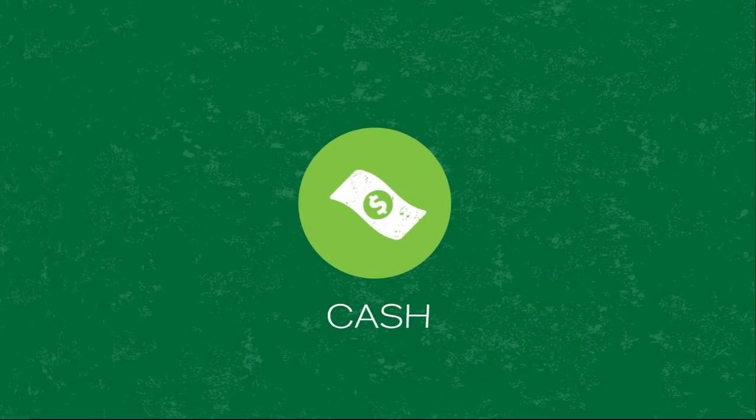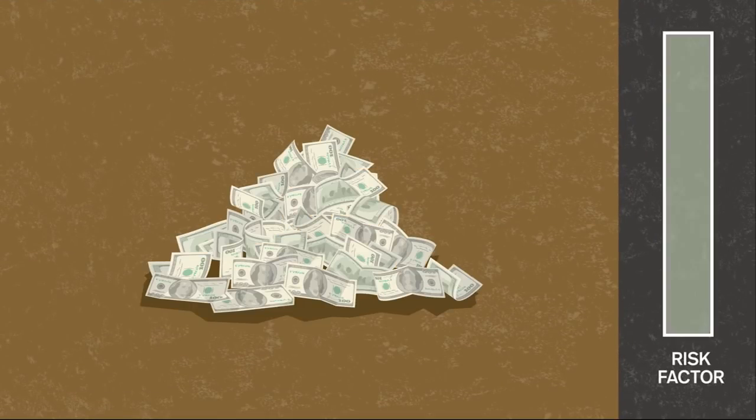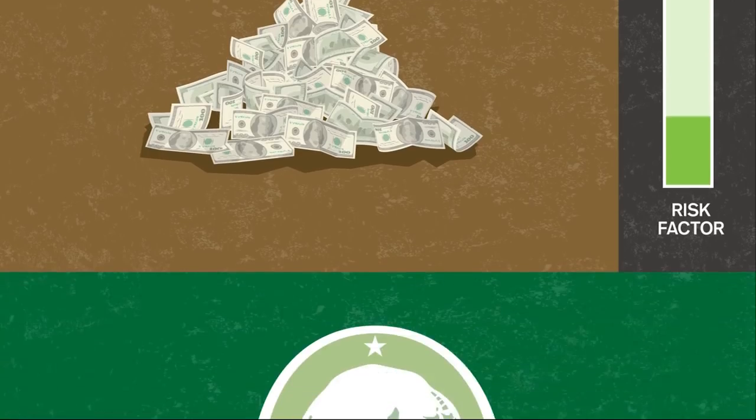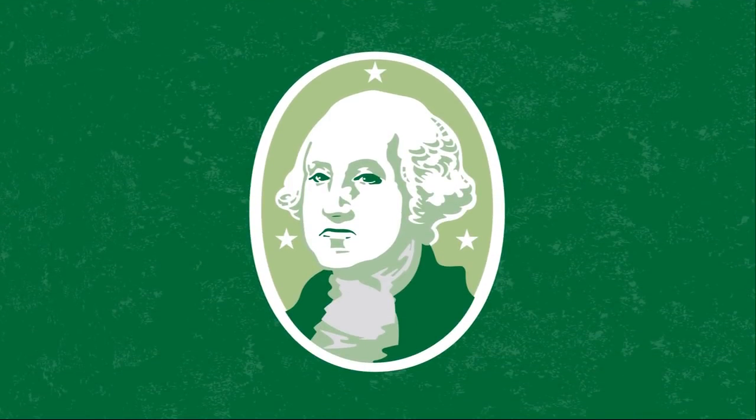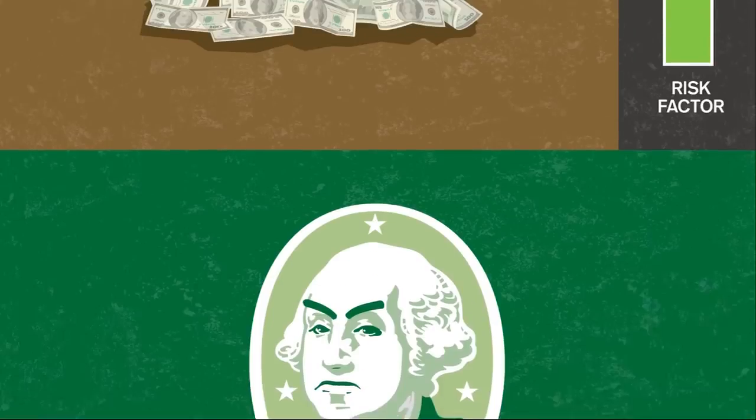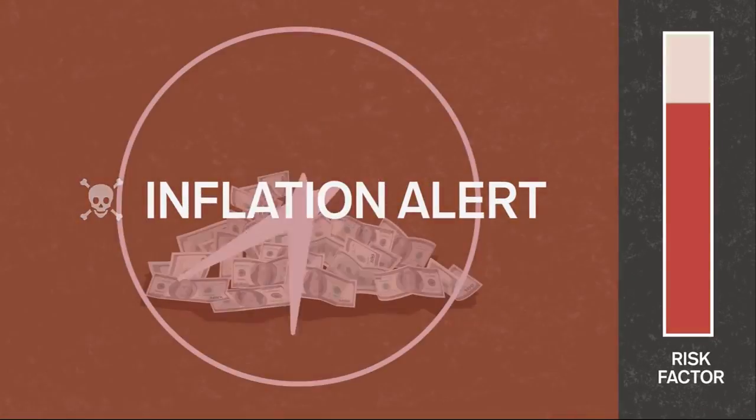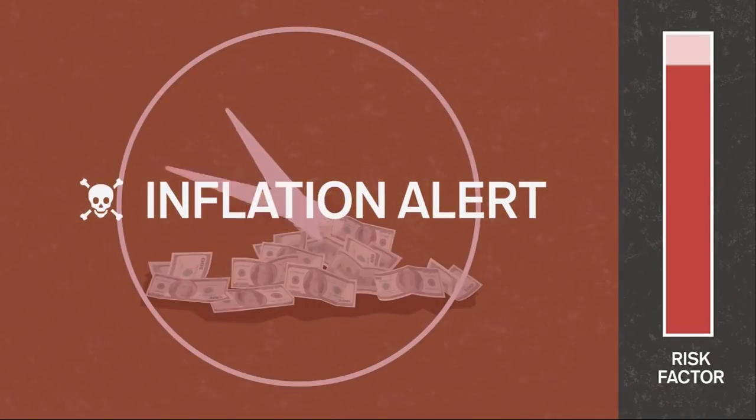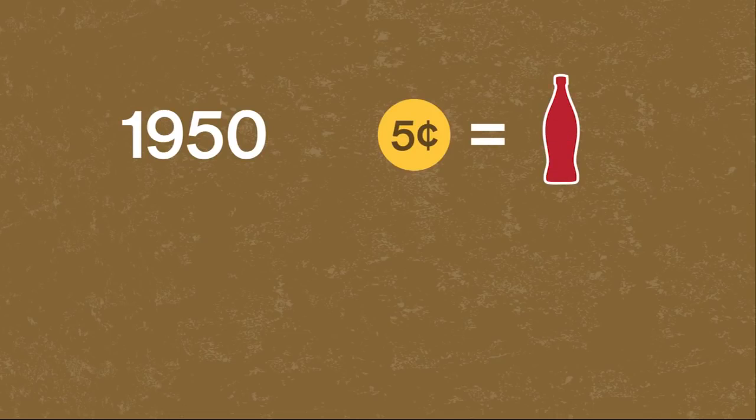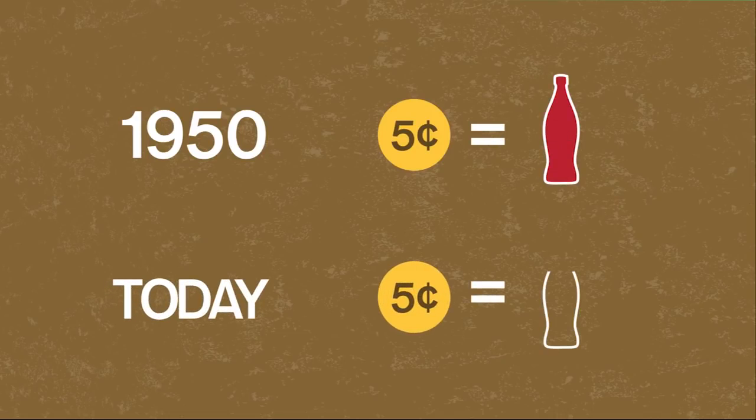Cash is, well, cash. In a 401k, it's usually available as a money market or stable value fund. Unlike other assets, there's little risk that your money will lose value, but that doesn't mean there's no risk at all. If you hold too much cash, you are at risk that inflation will leave your money worth less compared to everything else. For example, in 1950, a nickel would buy you a Coke. But if you save that nickel until today, you wouldn't have enough to buy that same Coke. Cash loses value over time.